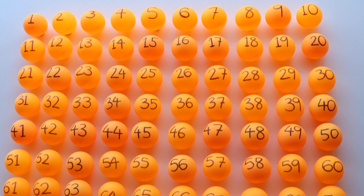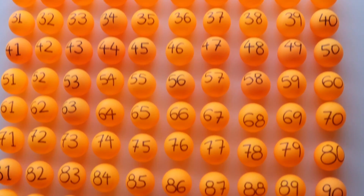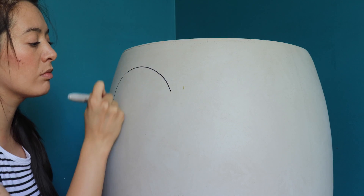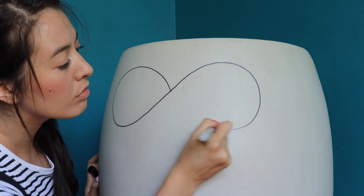Imagine you have an infinitely large vase and an infinite number of balls, all labelled 1, 2, 3 and so on. Obviously this is not an infinitely large vase and this is not an infinite number of balls — I'm on a budget — but this is a thought experiment and we can do things here that we can't usually do in the real world.